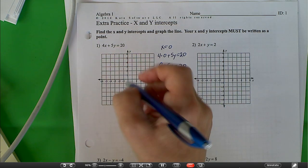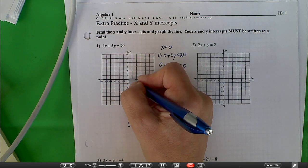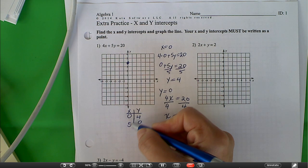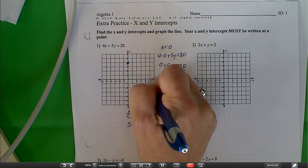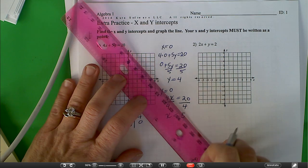So I have x being equal to 0, y is 4, x is equal to 5, y is 0, and this is what our graph looks like.